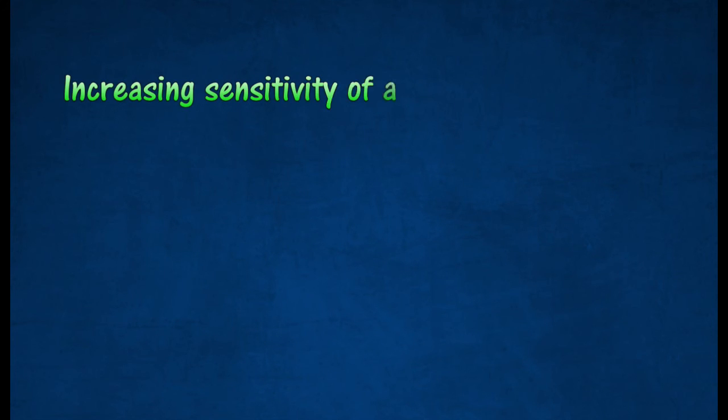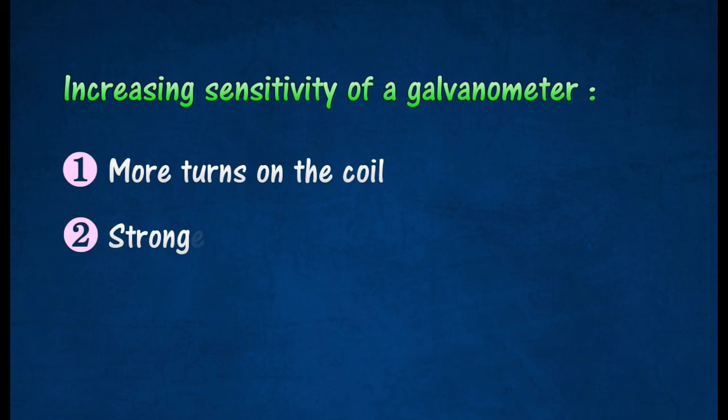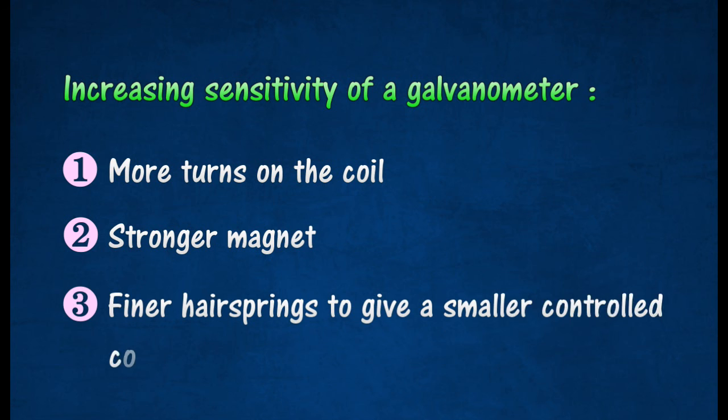The sensitivity of a galvanometer can be increased by having more turns on the coil, a stronger magnet, and a finer hair spring to give a smaller controlled couple.